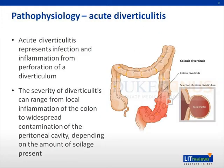Now let's review the pathophysiology of acute diverticulitis. Acute diverticulitis represents infection and associated inflammation arising from perforation of a diverticulum. This process is usually initiated when the narrow neck of a diverticulum becomes obstructed by fecal matter, leading to distension of the diverticulum, bacterial overgrowth, and ultimately perforation. The severity of acute diverticulitis can vary on a wide spectrum, ranging from local inflammation of a limited portion of colon to free perforation with widespread contamination of the peritoneal cavity.